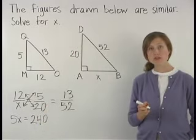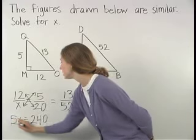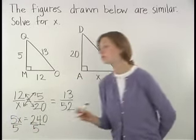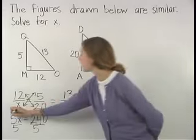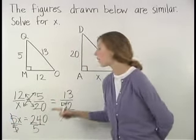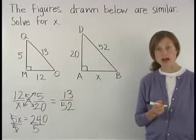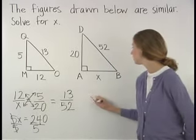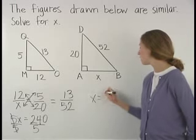Now, to solve for X, we divide both sides of the equation by 5. On the left side, the 5's cancel, and on the right, 240 divided by 5 is 48. So we have X is equal to 48.